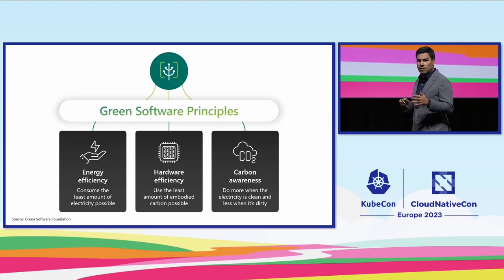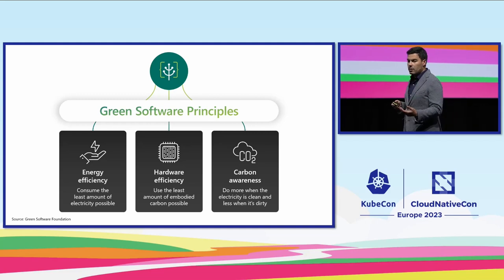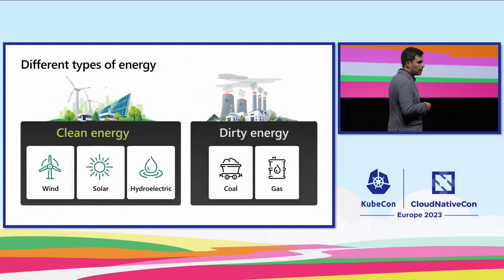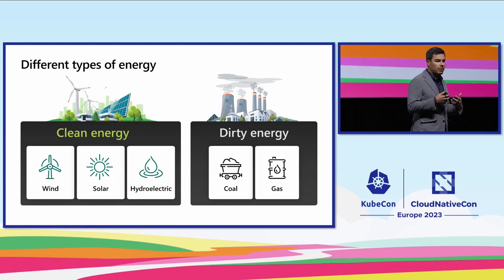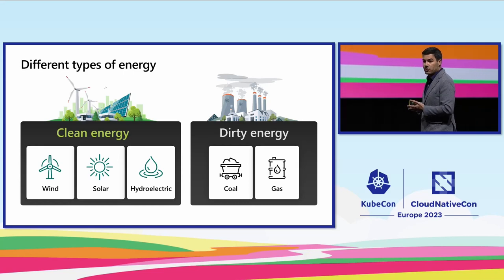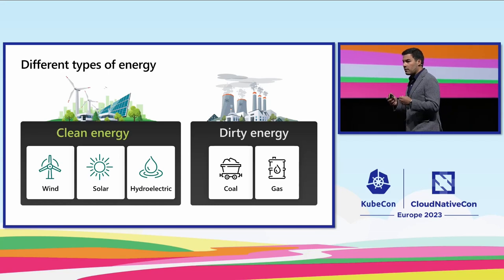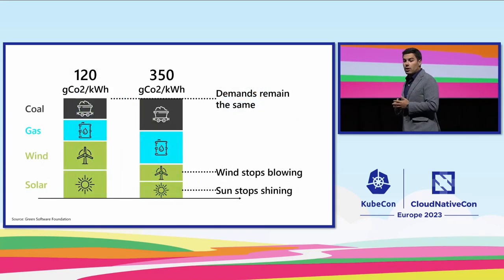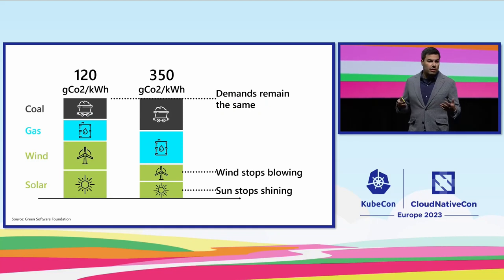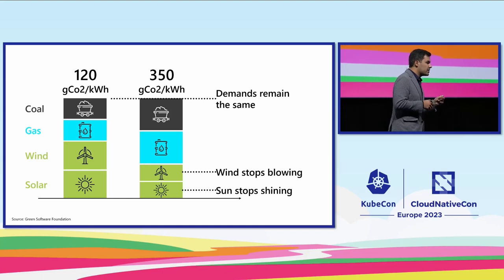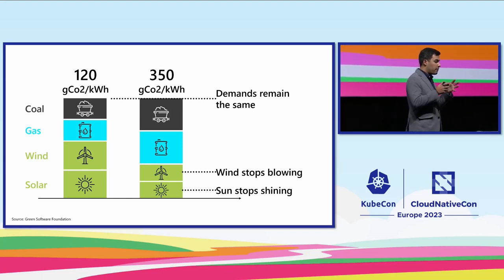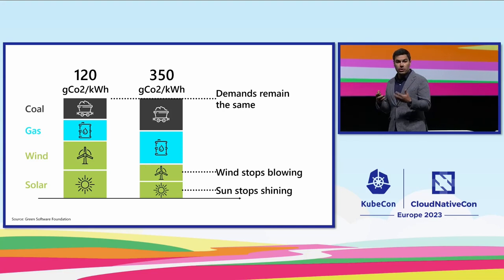The first two are probably fairly well understood and quite direct. So let's deep dive into the third one a little bit more. Before we go too far, let me explain it. When I say clean energy, I'm talking about what we regularly describe as renewable energies. And when I say dirty energy, that is what we commonly call fossil fuels. Now that we know the types of energy that are out there, let's look at the concept of carbon intensity. Carbon intensity is the measure of the amount of carbon produced in order for the energy that we use to be created.